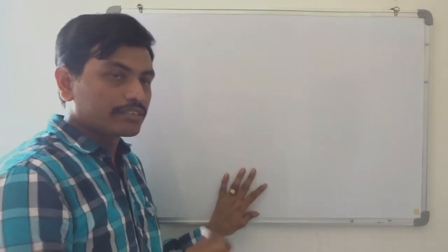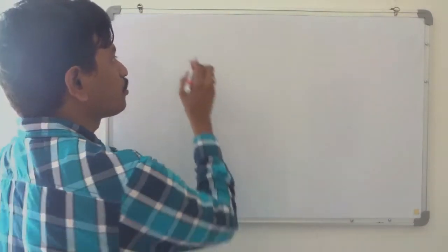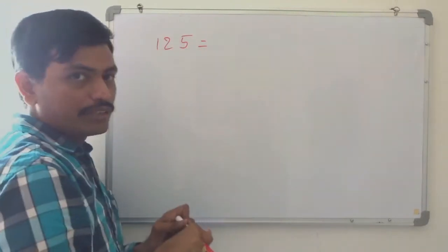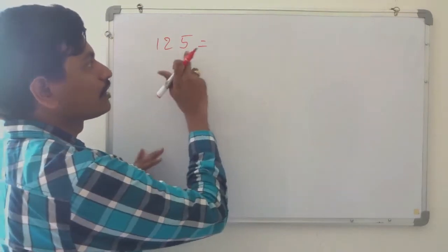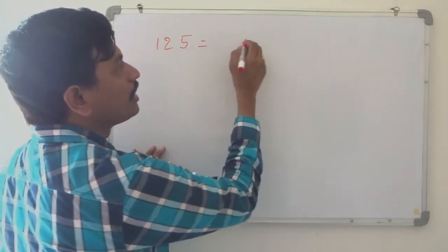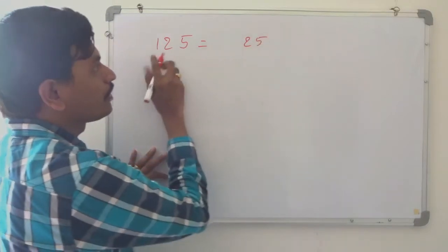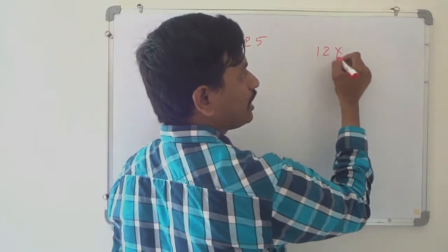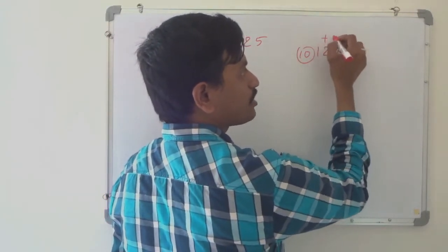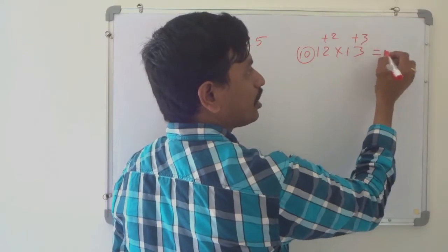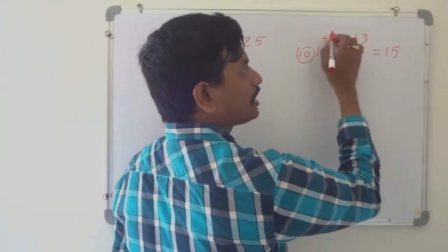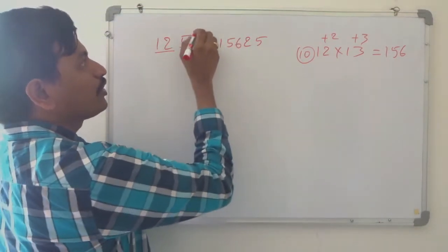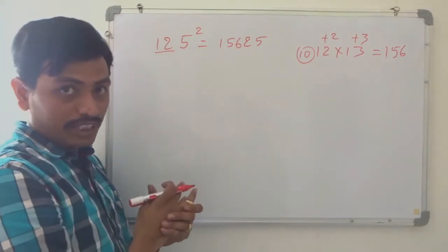Using this method we can find some more squares. I want to find 125 squared. In the previous video we have seen the square of numbers ending with 5, which ends with 25. We need 12, and the next number is 13. Using the same method, 12 into 13: base is 10, plus 2 plus 3. Cross addition: 12 plus 3 is 15. And 3 twos are 6, so 156. Therefore 125 squared is 15625.